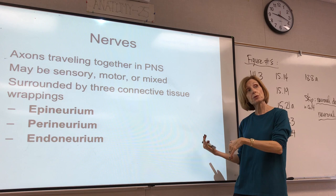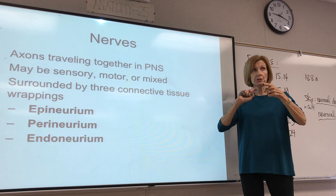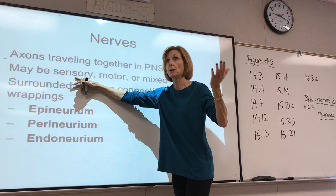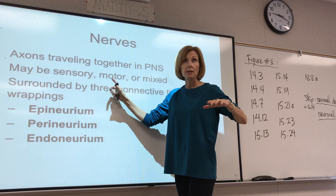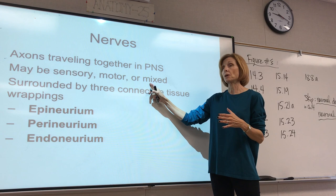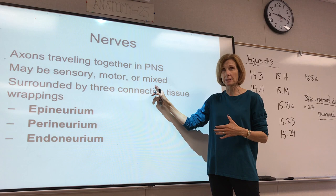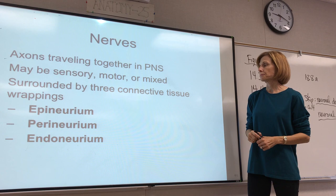The interesting thing about a nerve is that it can contain different types of neurons — within the same nerve we can have sensory neurons and motor neurons traveling right next to each other, with action potentials traveling in different directions. So nerves can be entirely sensory, entirely motor, or mixed — carrying both sensory and motor neurons. Mixed is actually the most common type of nerve in the body.